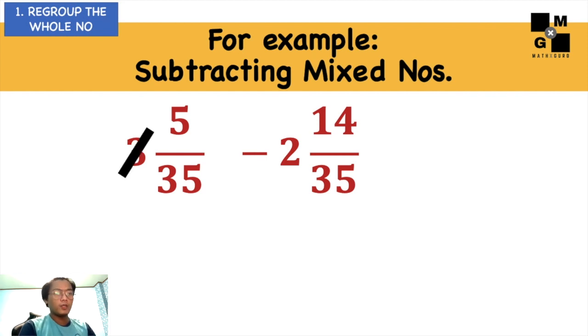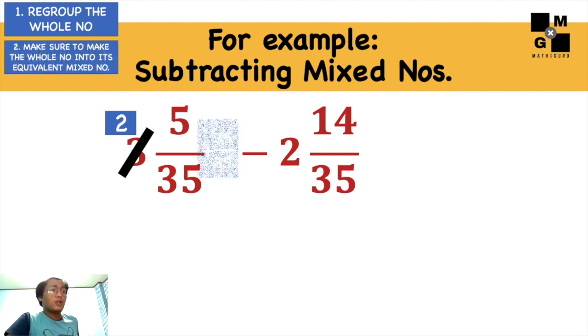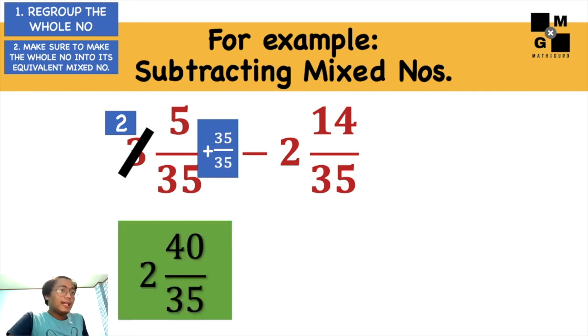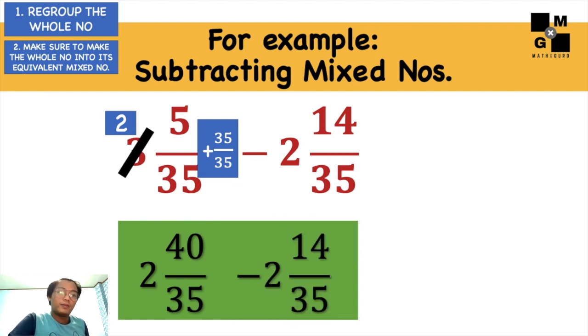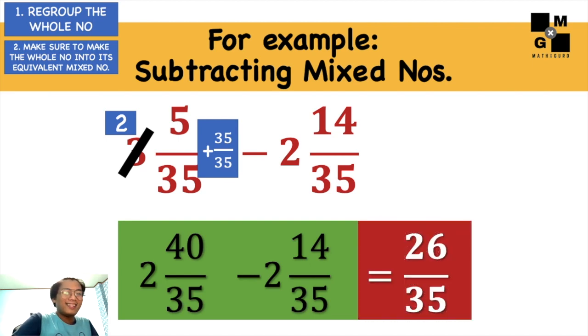How will we do that? Again, we can regroup the whole number 3. 3 will become 2, and then the other one will become a fraction that is equal to 35 over 35. So 3 and 5/35 is equivalent to 2 and 40/35. Now subtract the 2 and 14/35. You will have 26 over 35.